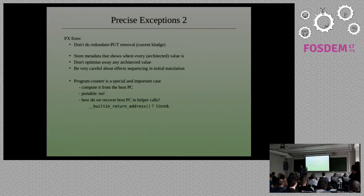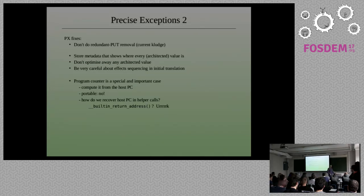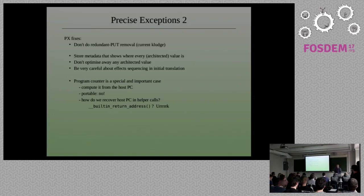That's another source of a large amount of memory traffic, and it's completely unnecessary because what you really want to do is calculate the simulated program counter from the host program counter using another table. This is difficult to do in a portable way because it requires recovering the host program counter inside some C helper call. This kind of stuff is easier in a single-architecture simulator like PIN or DynamoRIO, but doing it in a framework supporting ARM, x86, MIPS, and others is actually a problem.